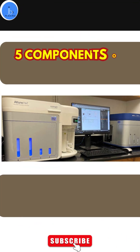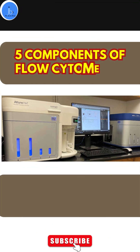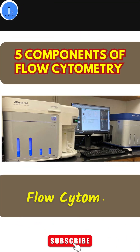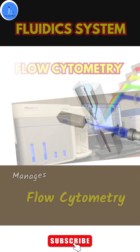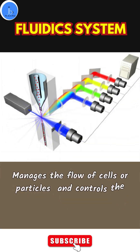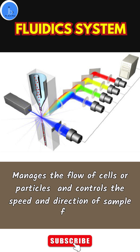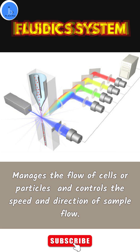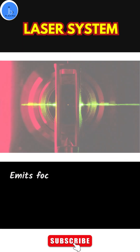These are five components of flow cytometry. Number one is the fluidic system, which manages the flow of cells or particles in a single-file stream, ensuring even distribution for analysis and controlling the speed and direction of sample flow.